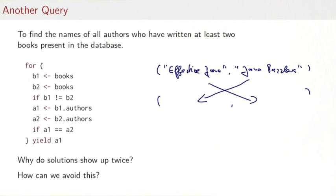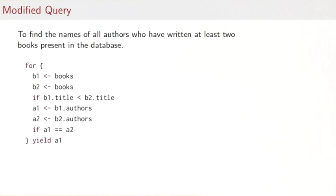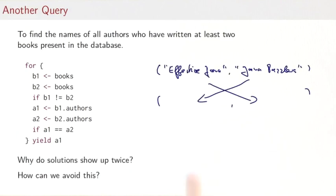How can we avoid this? One easy way to avoid that would be to say, instead of just demanding that the two books are different, we demand that the title of the first book must be lexicographically smaller than the title of the second book. That would mean in our previous one we would get Effective Java and Java Puzzlers as before, but we wouldn't get the pair in reversed order because in lexicographical order, Effective Java comes before Java Puzzlers.